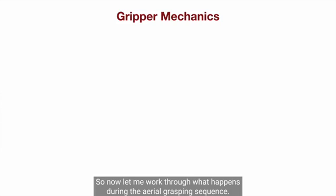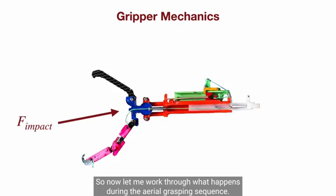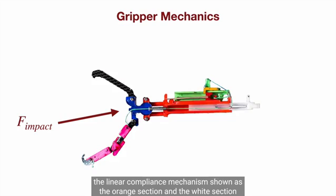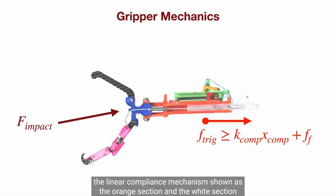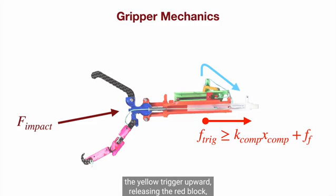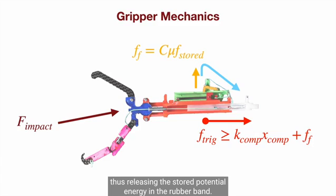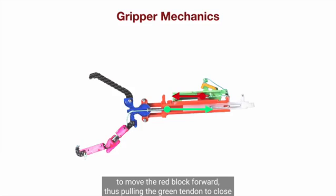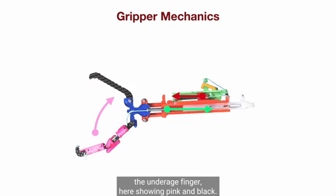So now let me walk through what happens during the aerial grasping sequence. As soon as the impact occurs, the linear compliance mechanism shown as the orange section and the white section starts to compress, causing the blue trigger tendon to pull the yellow trigger upward, releasing the red block, thus releasing the stored potential energy in the rubber band. The stored potential energy is used to move the red block forward, thus pulling the green tendon to close the under-actuated finger here showing pink and black.